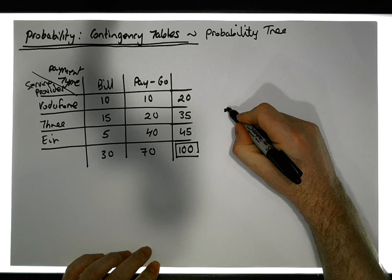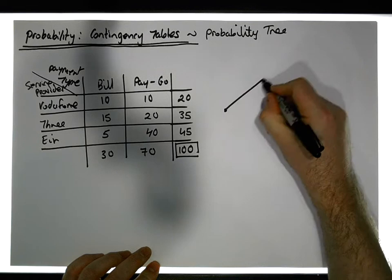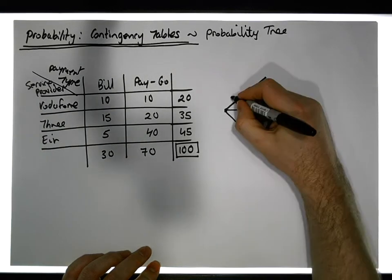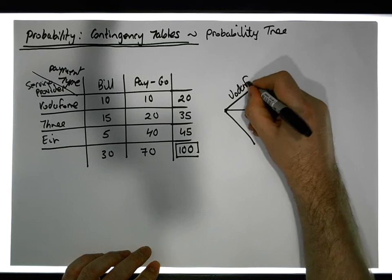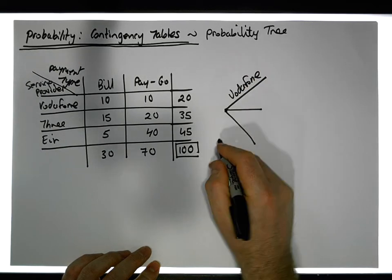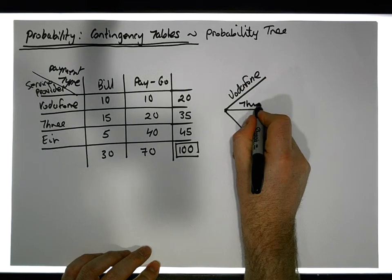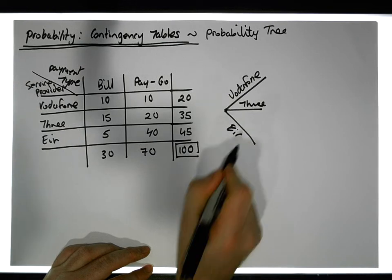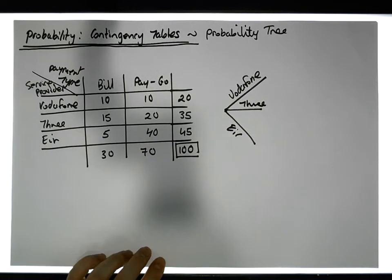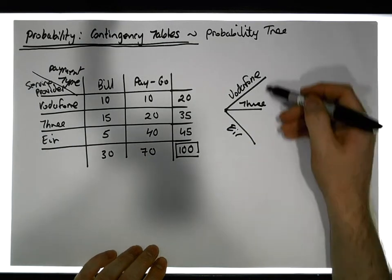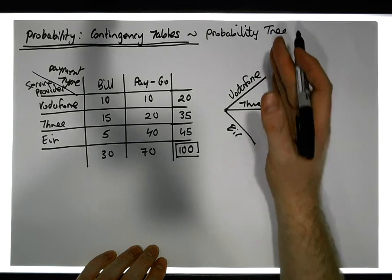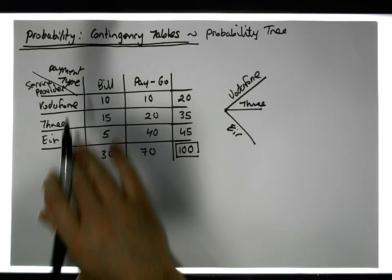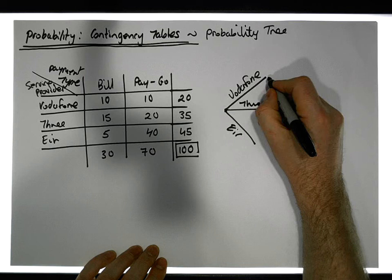Starting with the root, you can see that service provider has three categories, so we have three branches. The first branch represents that you're a Vodafone customer, the second branch represents that you're a Three customer, and the third branch represents that you're an Eir customer. Since we have two categorical variables, there will be two levels in this tree.